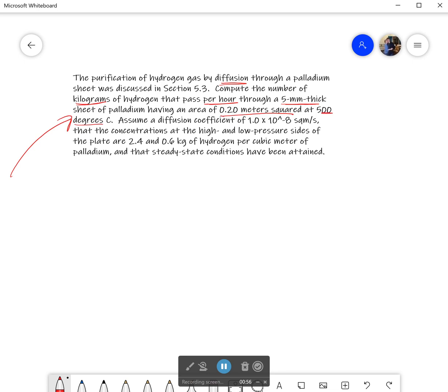It's going to be at 500 degrees Celsius. Lots going on here. Assume a diffusion coefficient of 1 times 10 to the negative 8 square meters per second, and that the concentrations at the high and low pressure sides of the plate are 2.4 and 0.6 kilograms per cubic meter. And finally, it says steady state conditions have been attained.